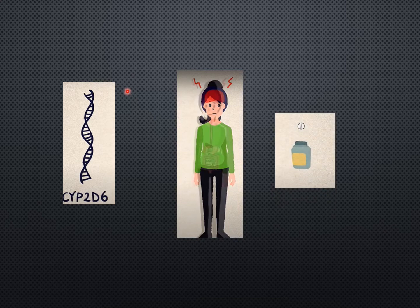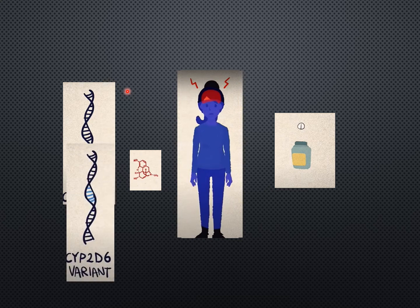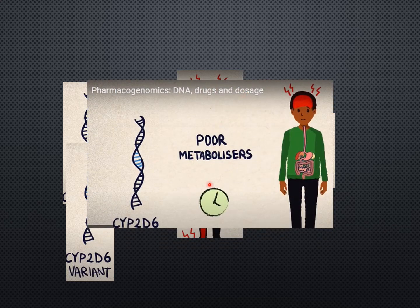In some individuals, there is a variant of cytochrome 2D6 which leads to inappropriate metabolism of codeine. It is therefore unable to relieve pain because codeine is not converted into its active metabolite, morphine. This is an example of a CYP2D6 variant with codeine. In poor metabolizers, the drug is not metabolized properly — it takes a long time — so the half-life of the drug increases, leading to increased plasma half-life and increased toxicity in the body.